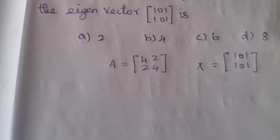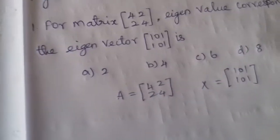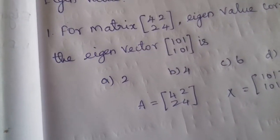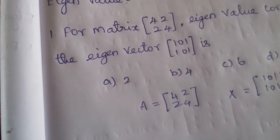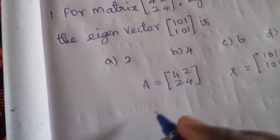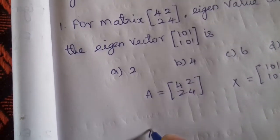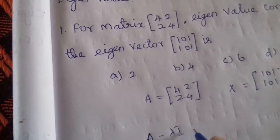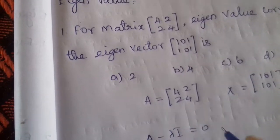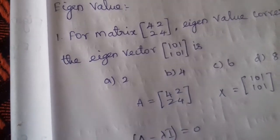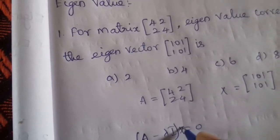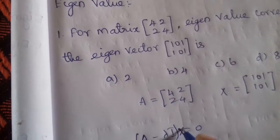To find the eigenvalue, the very important formula is: (A minus lambda I) equals 0, and A minus lambda I into x equals 0.